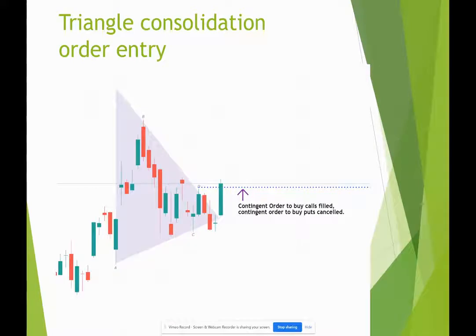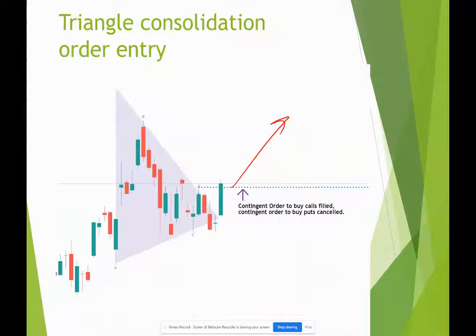Then we get the big move. We've got a breakout — our order is filled for the calls. Because it's an OCO order, the put order is canceled and now we're in calls hoping it goes up. Hopefully that's not a false breakout, but sometimes it is and it comes back down.